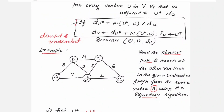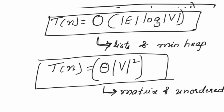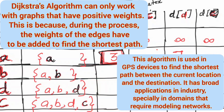The algorithm keeps doing these steps using the formula to find the minimum cost to reach the destination. The time complexity for Dijkstra's algorithm is O(E log V) when using an adjacency list with a min-heap priority queue. If using an adjacency matrix with an unordered array as the priority queue, the time complexity becomes Θ(V²).